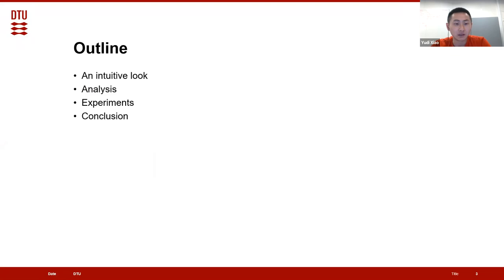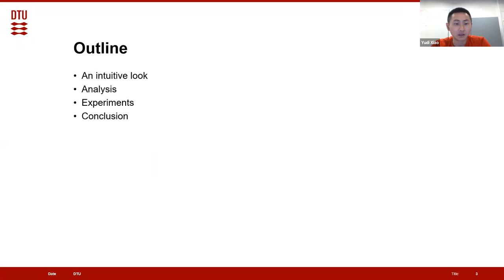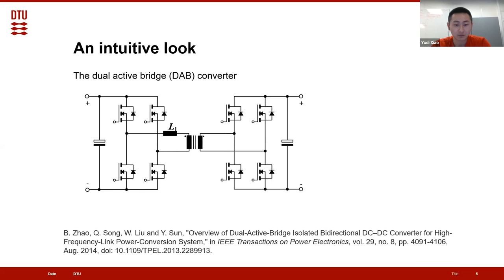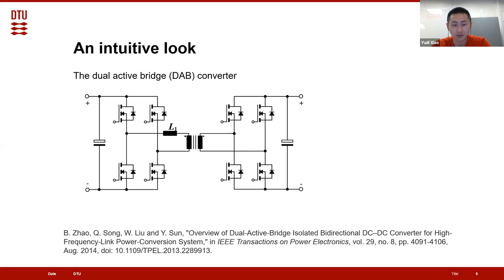The presentation is split into four parts. The first is an intuitive look where I will introduce the basic idea — and you will find it is actually very simple. The second part is the analysis, which is basically some calculation and simulations. The third part is experiments to verify the analysis, and finally I prepared some conclusions. We worked on this dual active bridge converter, or DAB converter, and for the first few slides I will give a brief introduction on the basic principle.